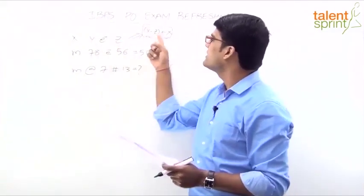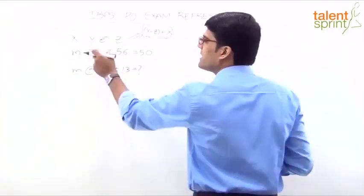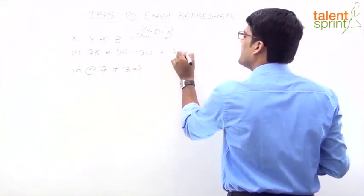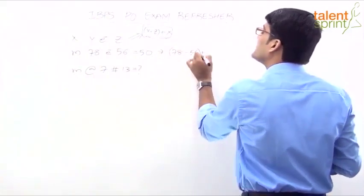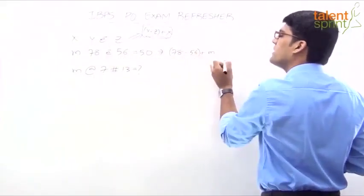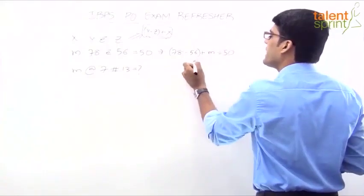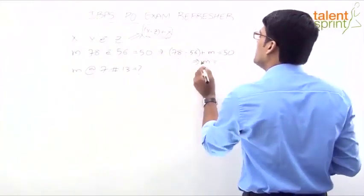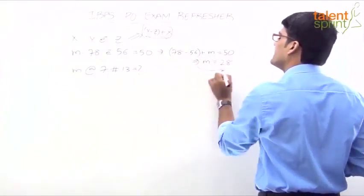Now look at the following. z subtracted from y. So y minus z and the result is added to x. So now compare this 78 minus 56. So which implies 78 minus 56 plus that x which is m in our case is equal to 15. Solve for m. What is m here? 78 minus 56 is 22. m will be 15 minus 22, negative... 28. That's it.